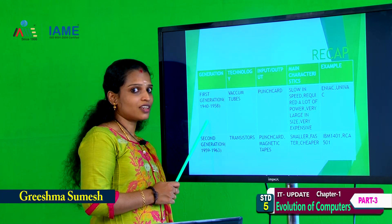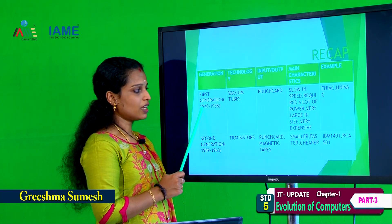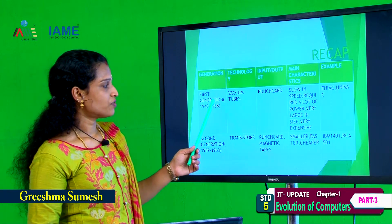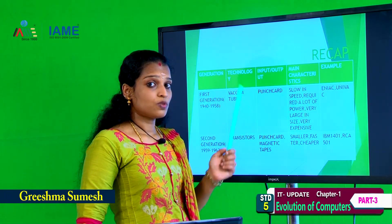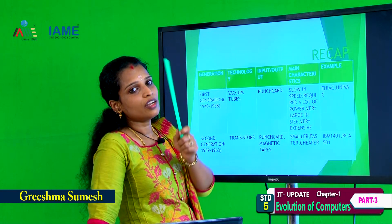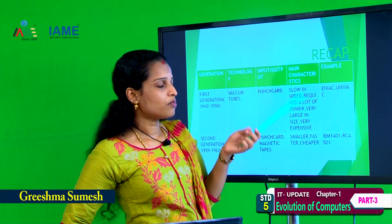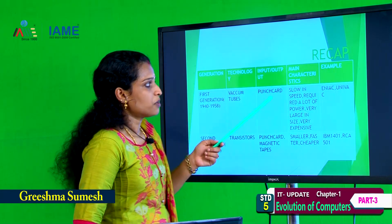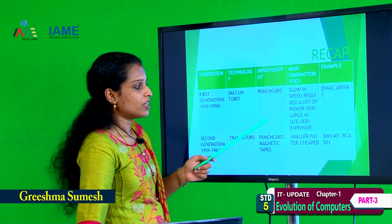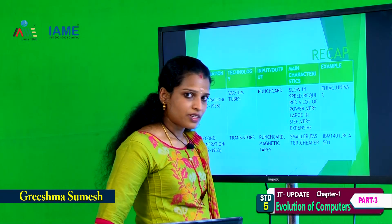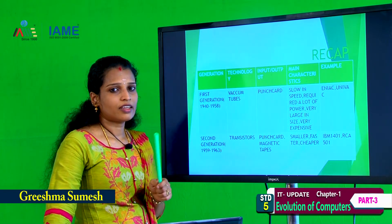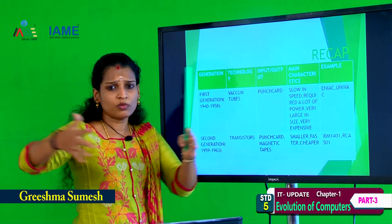First generation computer, 1940 to 1958. First generation computer used vacuum tubes. Input and output devices are punch card — only punch card was used in first generation computer.